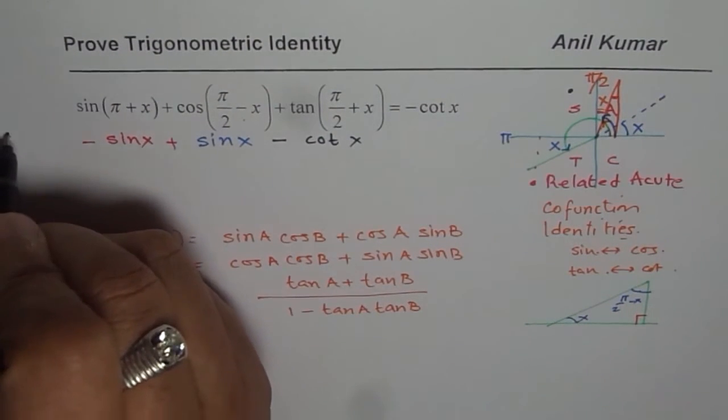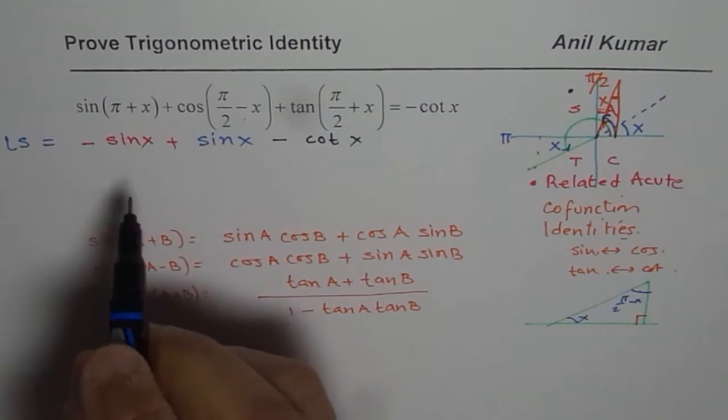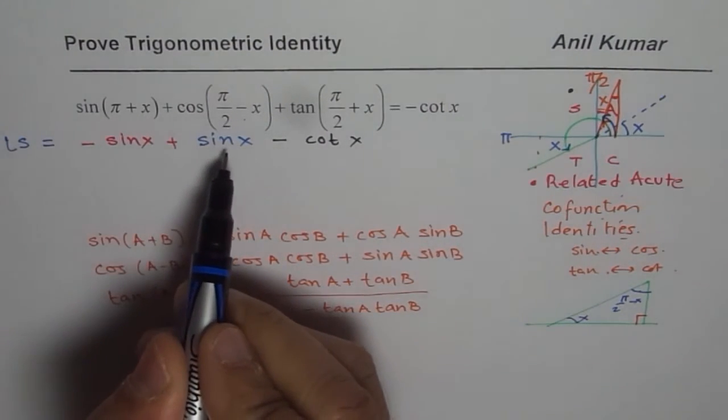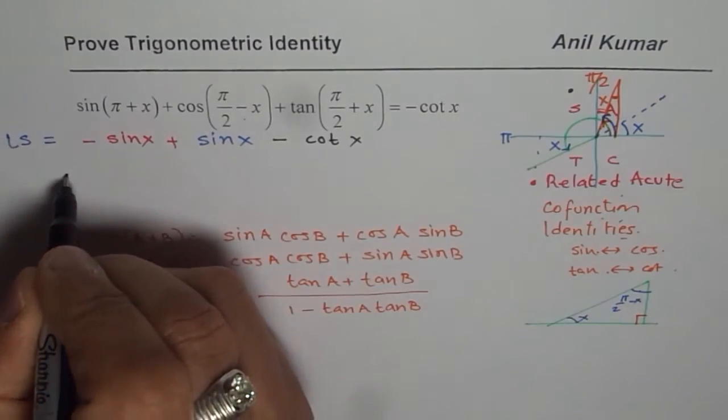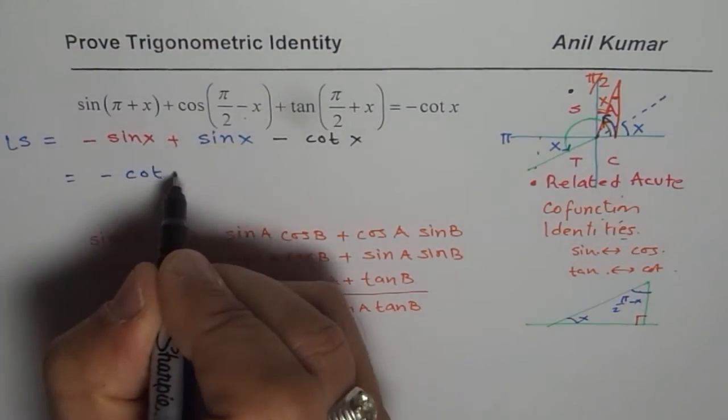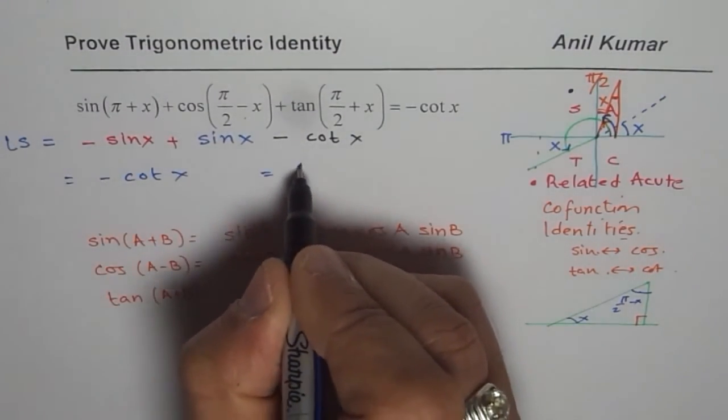Now, that is the left side we are working on. Is it okay? Now, you can clearly see minus sin x plus sin x is 0, minus cotangent x is what we get. And which is equals to the right side.